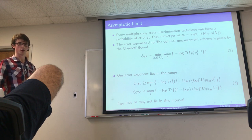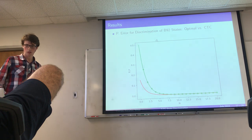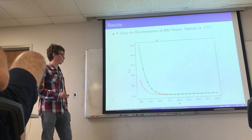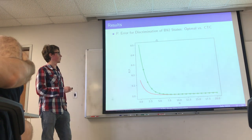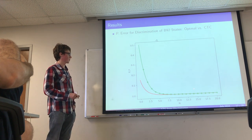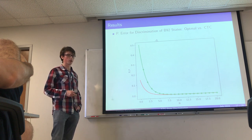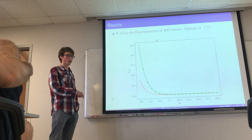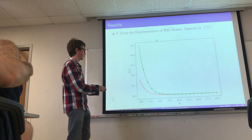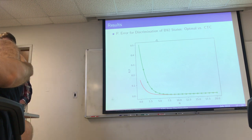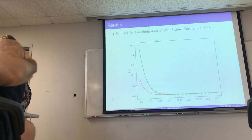For some simple cases, we do achieve the Chernoff bound. The plot shows the probability of error using our state discrimination circuit versus the number of copies of the input state for the two input states |0⟩ and |−⟩ — the B92 QKD states. The green curve represents the analytically calculated error probability, and the red curve represents the optimal probability. For finite N, the optimal strategy is better than our CTC strategy, but analytically, in the limit of large N, we achieve the Chernoff bound — the optimal strategy has no advantage over ours.